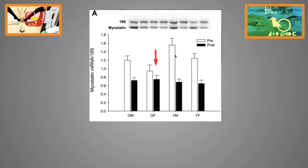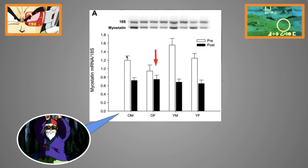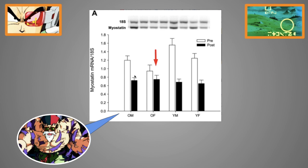Myostatin is also the reason why old women put on a lot less muscle than young men or old men after training, mainly because they have a hard time lowering myostatin even when they train. As you can see here, old men have a big drop in myostatin after training.